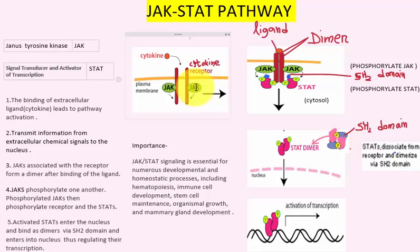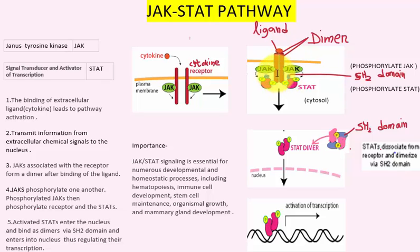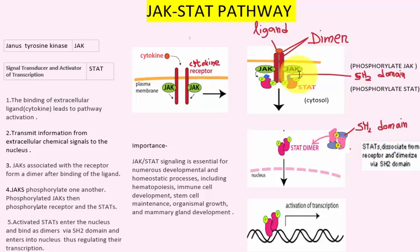The JAK associated with the receptor then forms a dimer. After the formation of the dimer, they start phosphorylating — they phosphorylate one another and also phosphorylate the cytokine receptor. After phosphorylation of JAK, they then activate STAT.